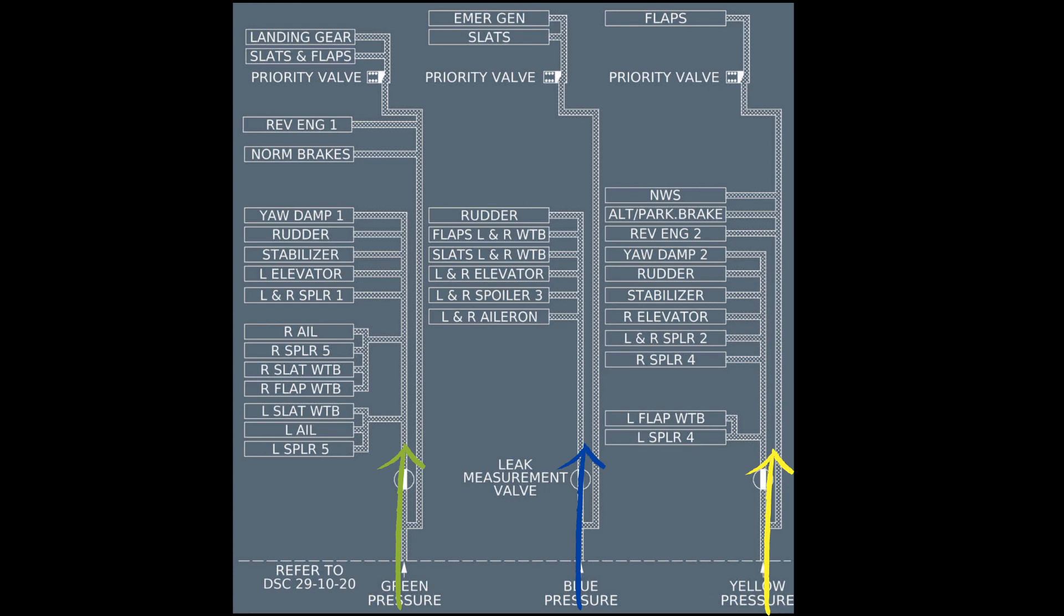Each accumulator supplies the pressurized hydraulic fluid to its users. You can see the complete list here in the system architecture. Some heavy users are supplied by a dedicated priority line. For the green system, the heavy users are the landing gear and slats and flaps.